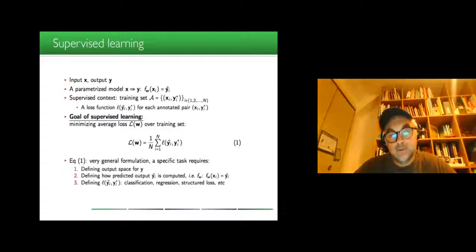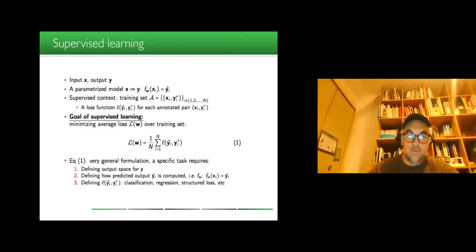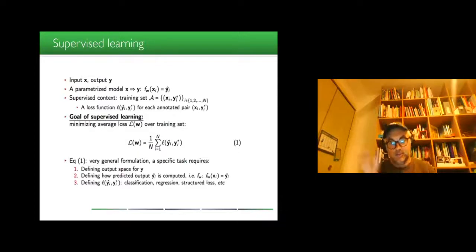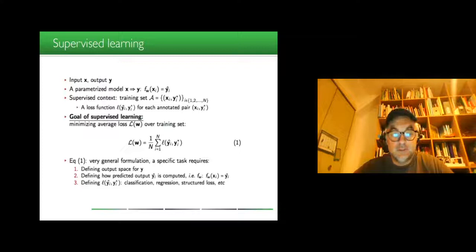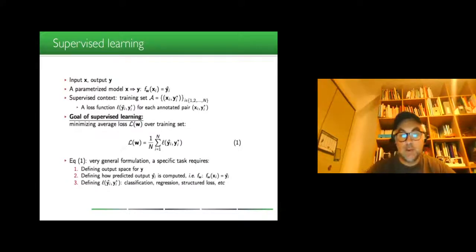The global goal in supervised learning is to minimize a loss function which is just an average value of the loss on the training set. You take n instances of pairs and you try to minimize the difference between the prediction and the ground truth. Equation one is a very general formulation. For each specific task you require to define the output y, to define how y hat is computed, and to define the loss which may be different if you have a classification or regression problem, and so on.